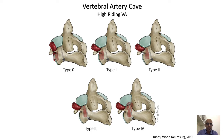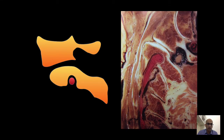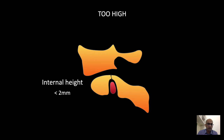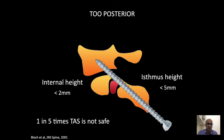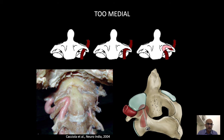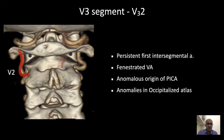In the V3a segment, we are looking for a high-riding vertebral artery in the vertebral artery cave underneath the C2 superior facet. In a parasagittal view, the internal height is from the top of the vertebral artery cave to the superior facet, and the isthmus height is from the vertebral artery cave to the dorsal surface of the pars. The vertebral artery cave is too tall if the internal height is less than 2 mm — it is still possible to pass a transarticular screw, but if the isthmus height is less than 5 mm, a transarticular screw can be dangerous. Sometimes the high-riding vertebral artery is also too medially located such that it notches the C2 vertebral body, making even C2 pedicle screws dangerous.